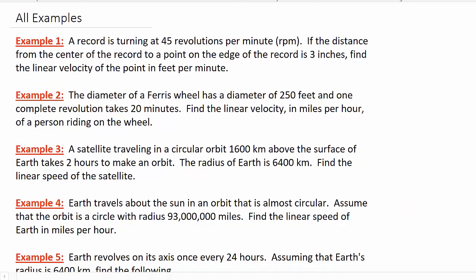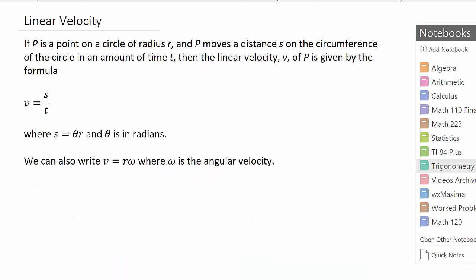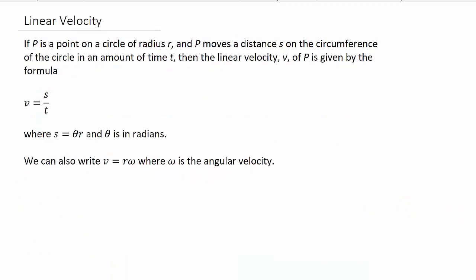But before we get into looking at the problems, let's look and see linear velocity. It says if P is a point on a circle of radius r and P moves a distance s on the circumference of the circle in an amount of time t, then the linear velocity v of P is given by the formula v equals s over t where s is theta times r and theta is in radians.